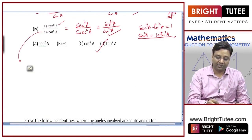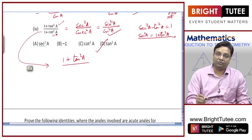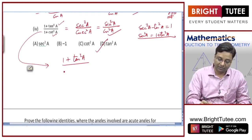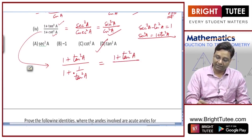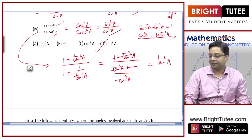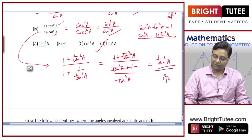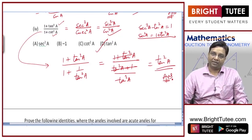A simpler manipulation: convert cot²a to 1/tan²a, giving (1 + tan²a) divided by (1 + 1/tan²a). Simplifying the denominator gives (tan²a + 1)/tan²a. The (1 + tan²a) cancels, and tan²a comes to the numerator — confirming the answer is tan²a.